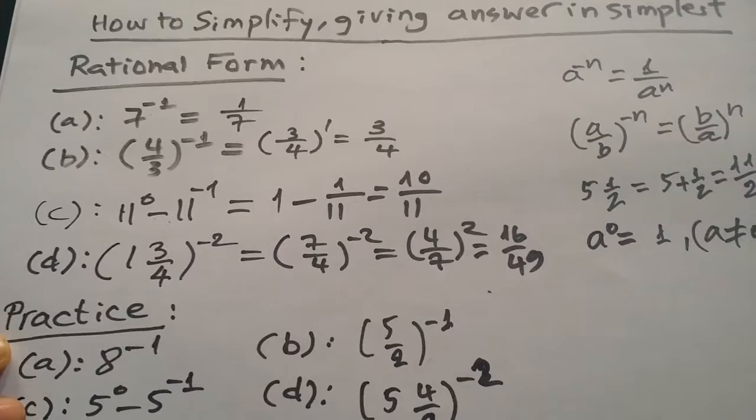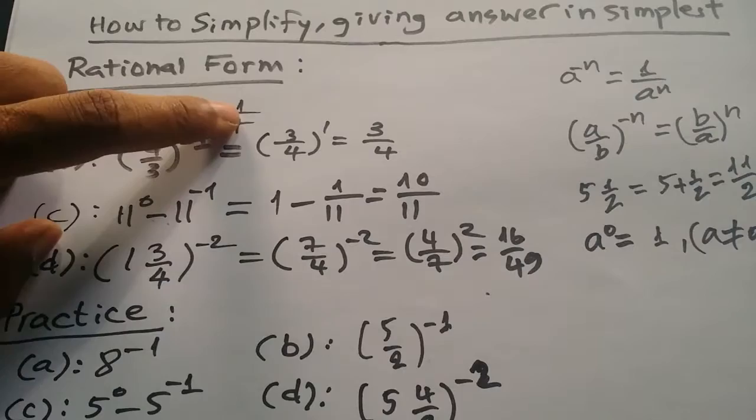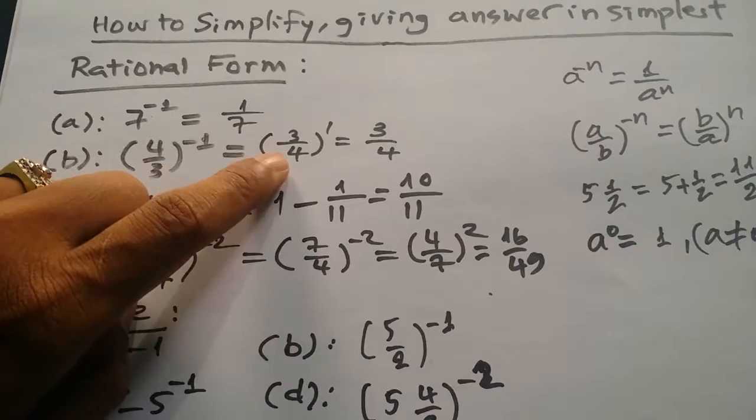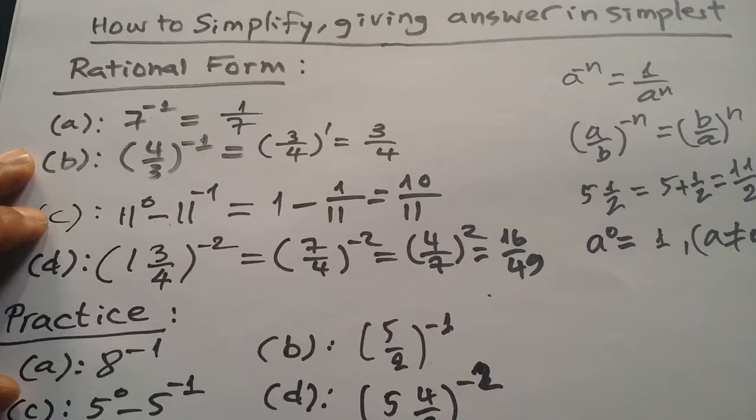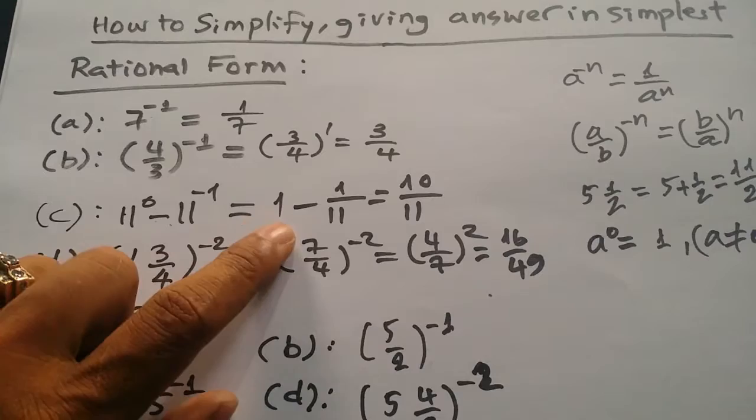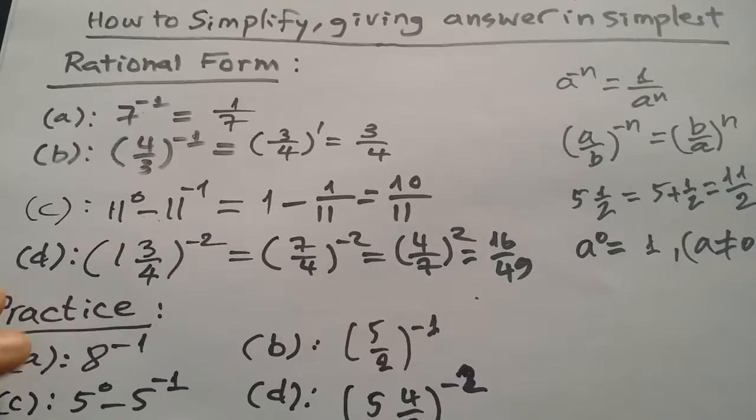For 7 to the power minus 1, you can write 1 divided by 7. For 3 to the power 3 divided by 4, write it as 3 divided by 4. For 11 to the power 0 minus 11 to the power minus 1, we write 1 minus 1 divided by 11, which equals 10 divided by 11.